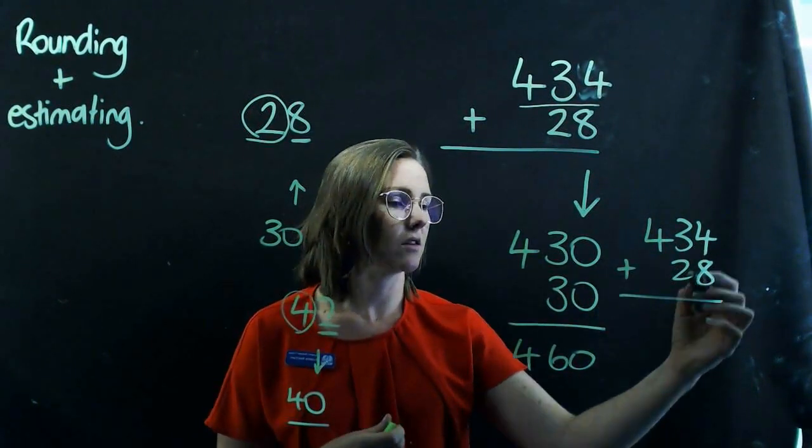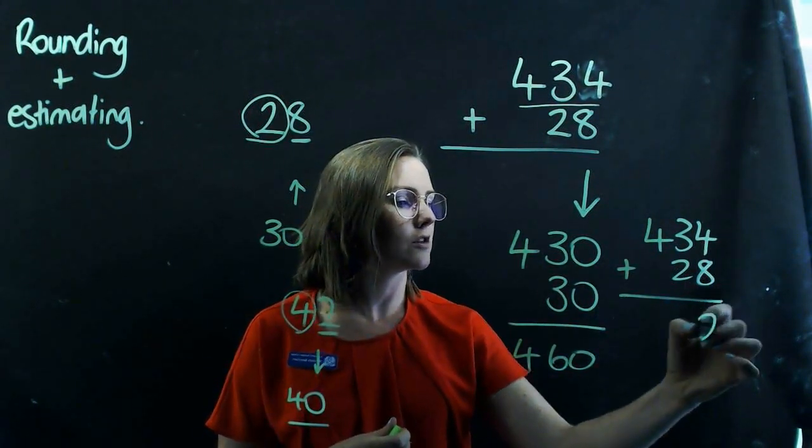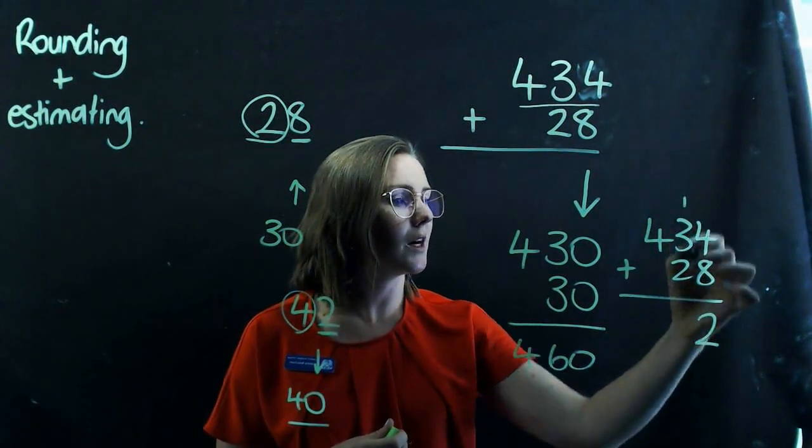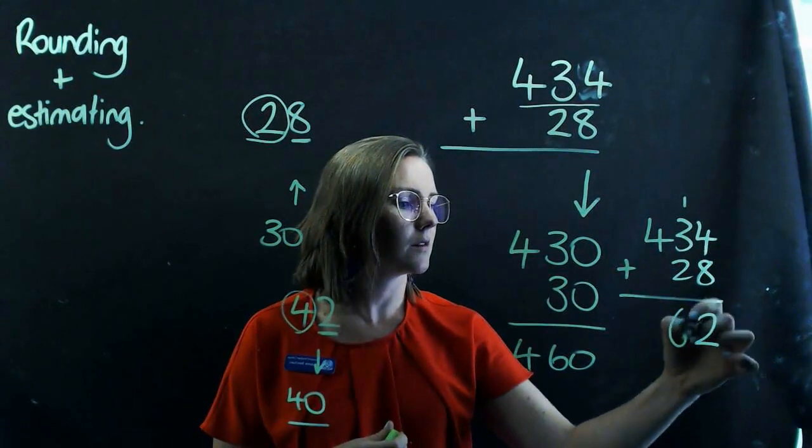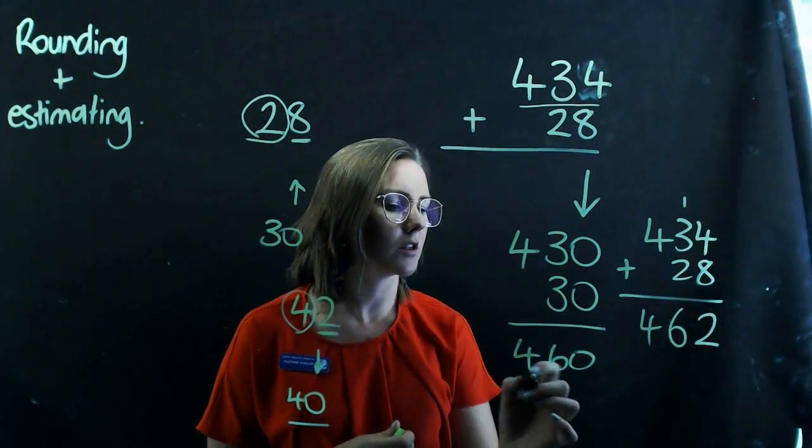And see how close it actually is. So 8 and 4 is 12. I put my 2 down and carry my 1. 1 and 3 is 4, 5, 6. All right. So really close.